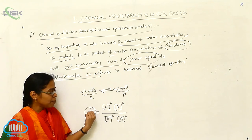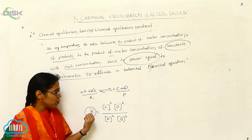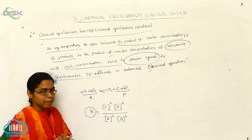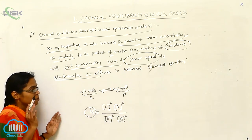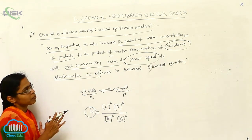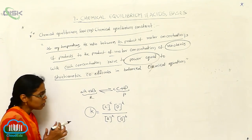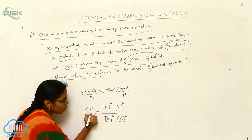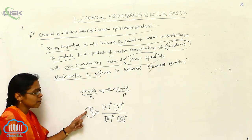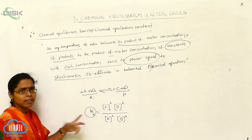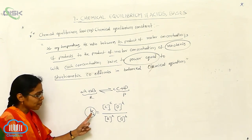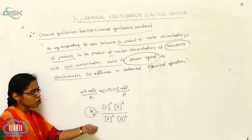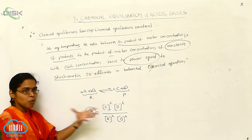The ratio between the product of molar concentration of products to the molar concentration of the reactants is called as chemical equilibrium constant. It is always represented with K. Whenever we are taking the concentration, you can use Kc. Kc indicates we are taking the equilibrium concentration of reactants and concentration of products.